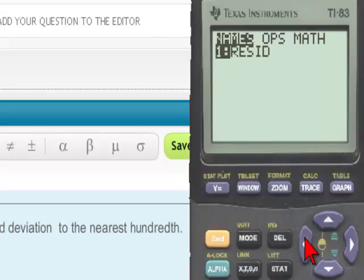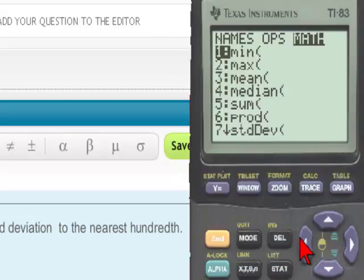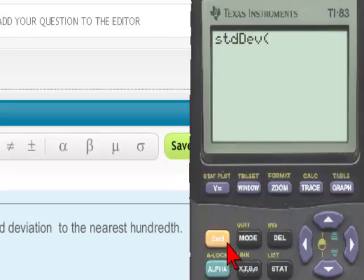We'll go to the math menu and we can simply select 7 which is the standard deviation and put in L4 using the yellow key and the number 4. Hit enter and again we have our value.